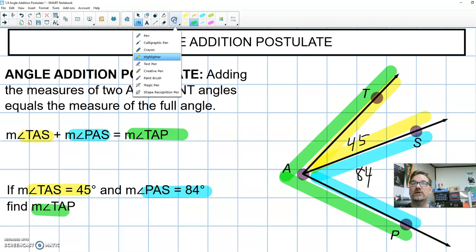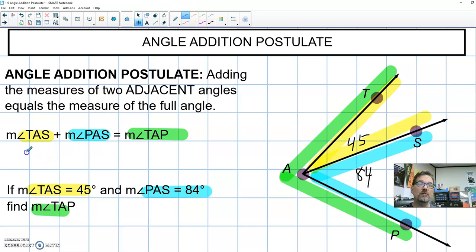Yellow plus blue equals green. So our yellow angle is 45 plus our blue angle, 84, will equal the green angle, the outside angle, which is 129. Boom.